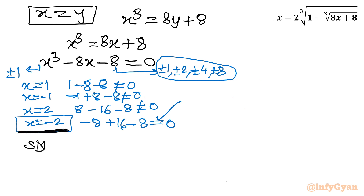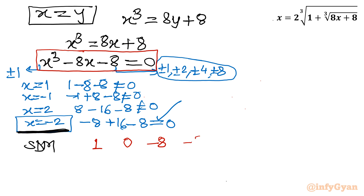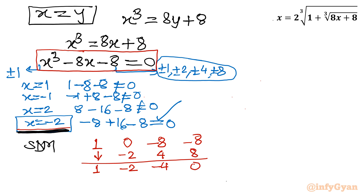Using synthetic division with base solution x = −2 and coefficients 1, 0, −8, −8: bring down 1; multiply −2 × 1 = −2; 0 + (−2) = −2; multiply −2 × (−2) = 4; −8 + 4 = −4; multiply −2 × (−4) = 8; −8 + 8 = 0. The resulting quadratic is x² − 2x − 4 = 0.